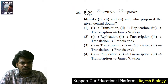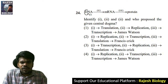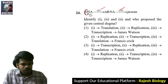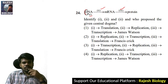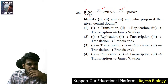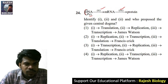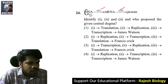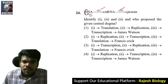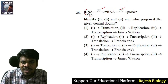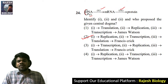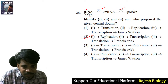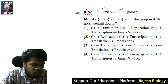Question 24: what is one, two, and three in the central dogma diagram? One is replication, two is transcription, and three is translation. The central dogma was proposed by Francis Crick. The right answer is option two. Aparna Patipanda, excellent.